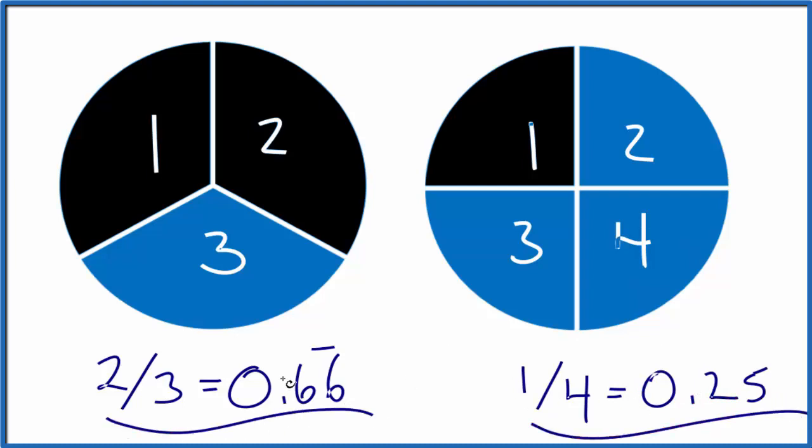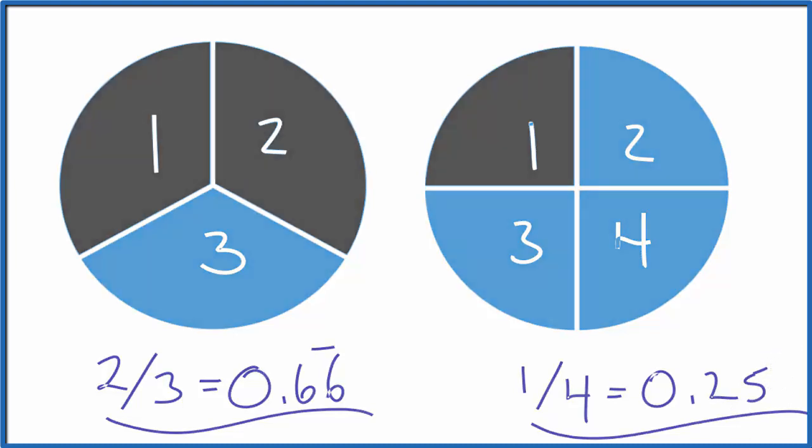We have zero point six six, and here we only have zero point two five. So in answer to our question, two-thirds is bigger than one-fourth. This is Dr. B, and thanks for watching.